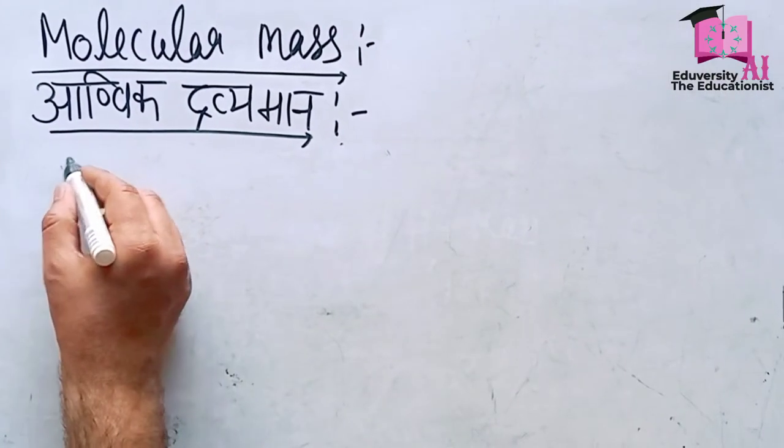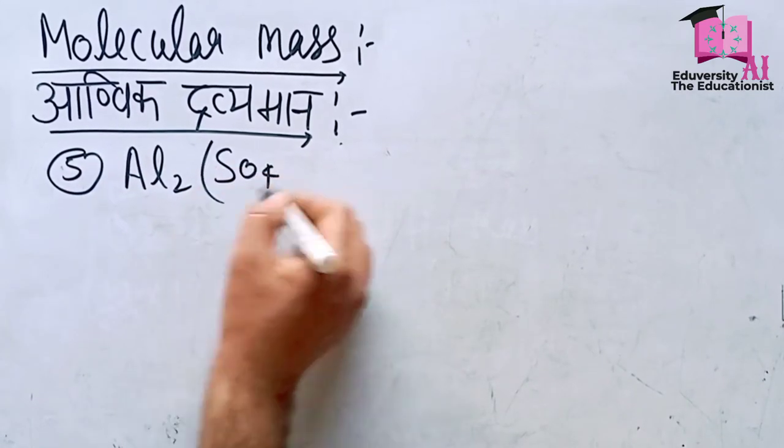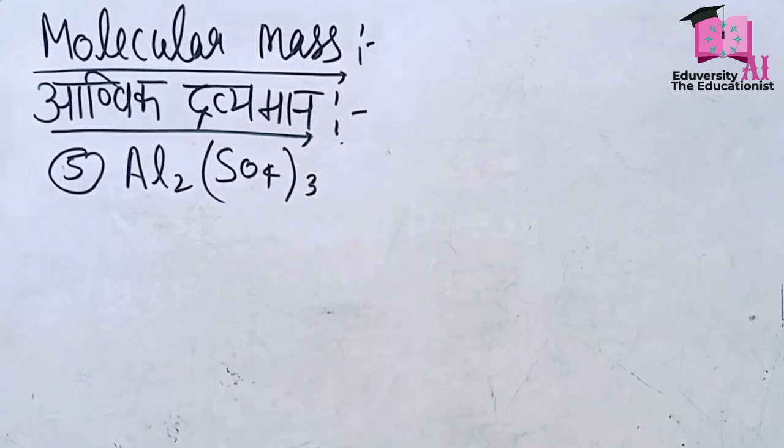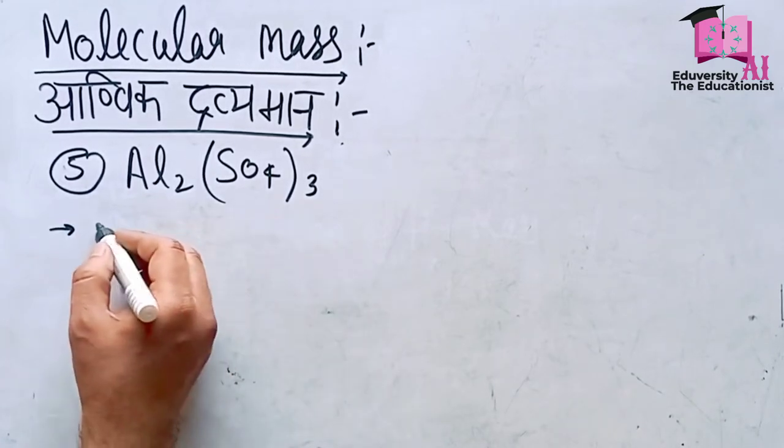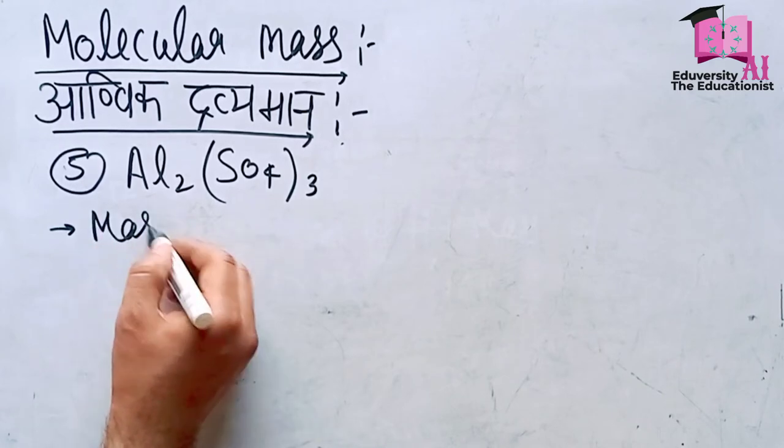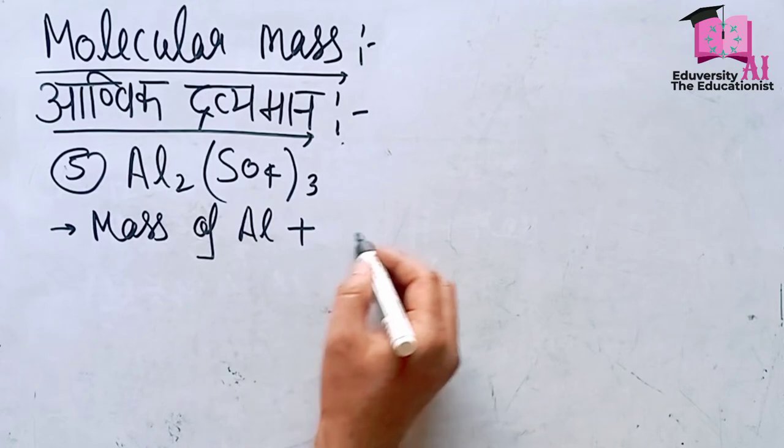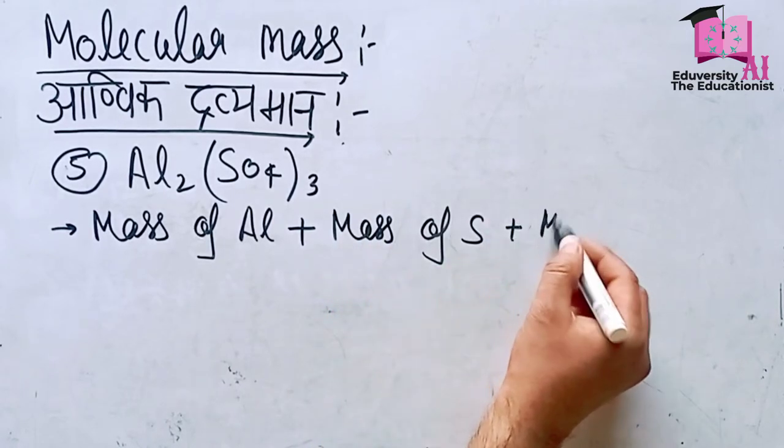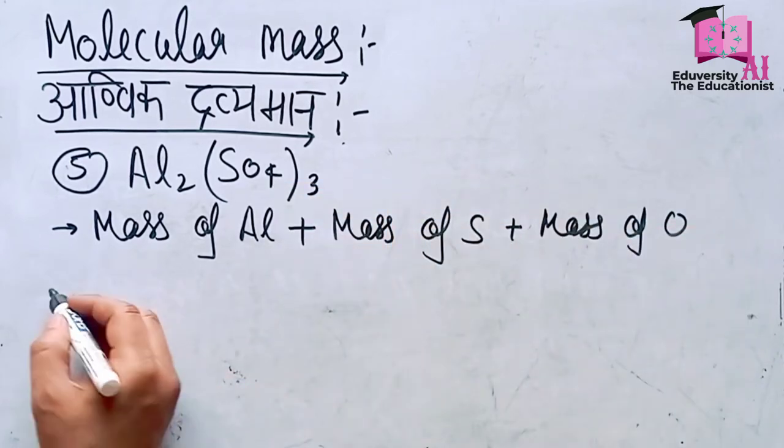Number 5 example here: Al₂(SO₄)₃, aluminum sulfate. Don't be confused. The formula is: mass of aluminum plus mass of sulfur plus mass of oxygen. Aluminum's mass is 27, and there are 2 aluminum atoms.